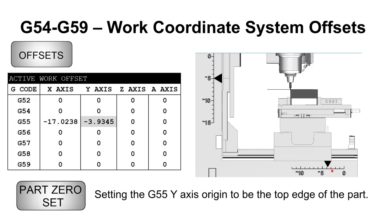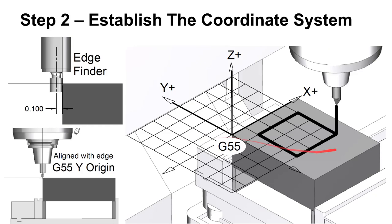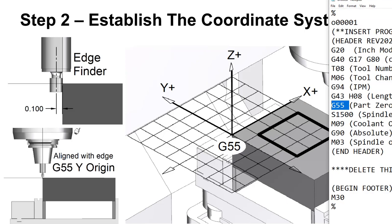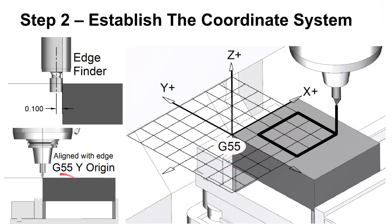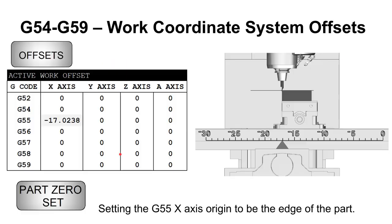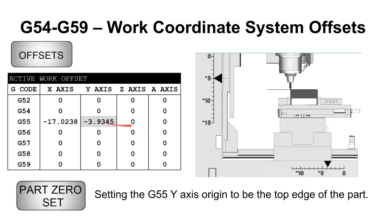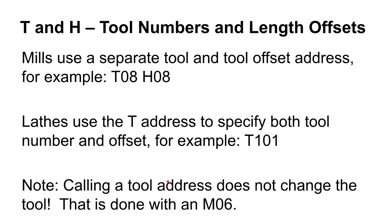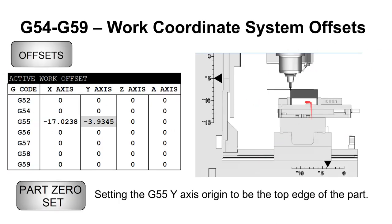The machine automatically plugs in its own Y-axis position at that point in space. When we want to use this G55 X-Y origin, all we have to do in our code is ask for G55 and trust the setup person — of course we have to communicate to them where we want it. There's a Z-axis also, but I'm not going to talk about that today. We'll leave that zero for now and discuss a better way of dealing with it later.